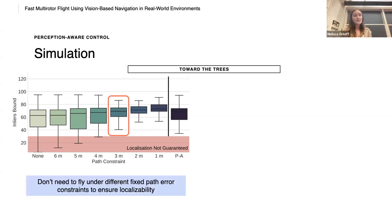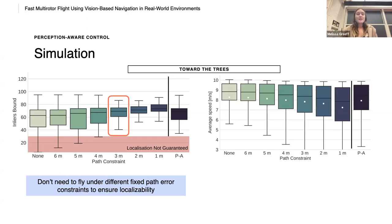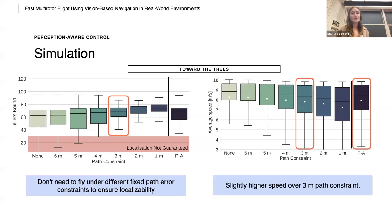And when we compare the average speed, we observe a slightly higher average speed over the three meter path error constraint. But in the case when we look towards the road, however, we have a higher speed over both the four meter and five meter fixed path error constraint. Even though in these cases, localization is not guaranteed.